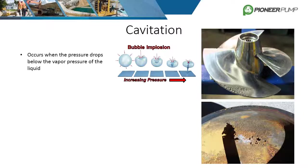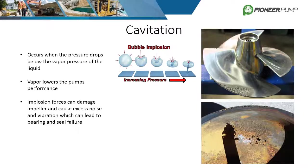Cavitation occurs when the pressure at the eye of the impeller drops below the vapor pressure of the liquid. When water turns to vapor, its volume increases drastically and limits the amount of water that can be moved through the casing. The collapsing vapor bubbles are extremely powerful and will eventually erode and damage the impeller and other components inside the pump casing. Cavitation also usually leads to excessive vibration, which can cause premature failure of bearings and seals. An easy indicator of cavitation is when the pump casing during operation sounds like it's full of small rocks.